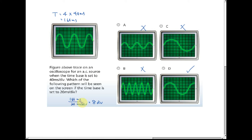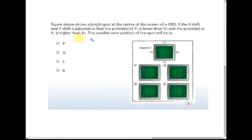The period is still 160 milliseconds. With the original time base it was four divisions, but when the time base is switched to 20 milliseconds per division, it now needs eight divisions to make one complete oscillation.